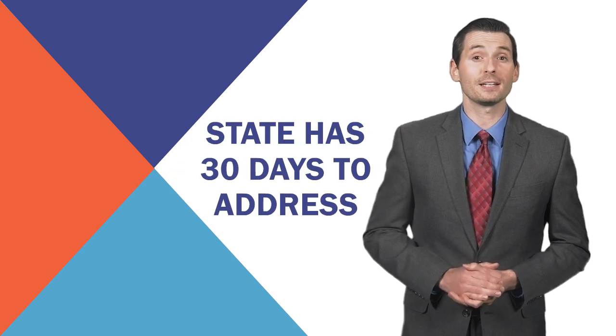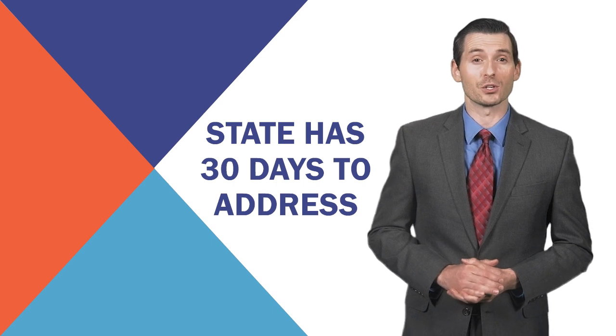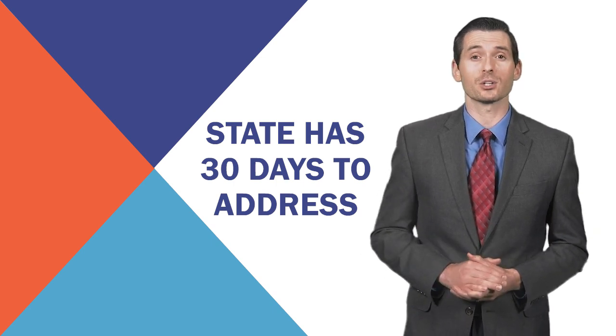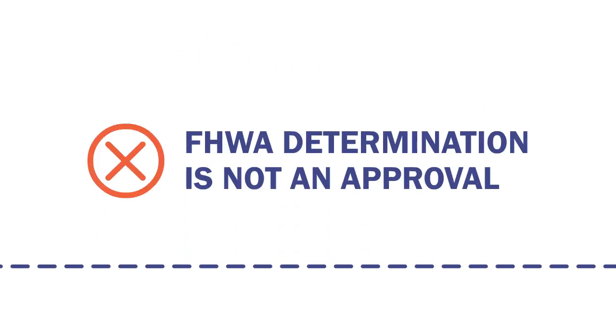In the case of a negative determination, FHWA will specify the deficiencies the state DOT needs to address. The state DOT will have 30 days to correct such deficiencies or submit additional information showing that the FHWA negative determination was an error. The FHWA determination is not an approval of the state DOT's investment strategies or other decisions contained in the TAMP.